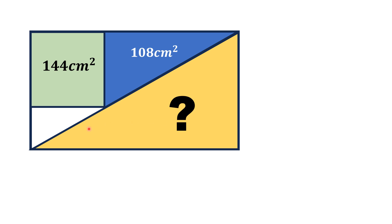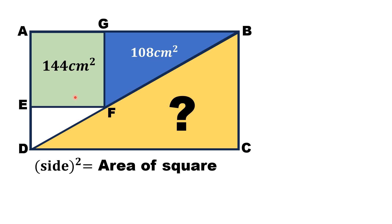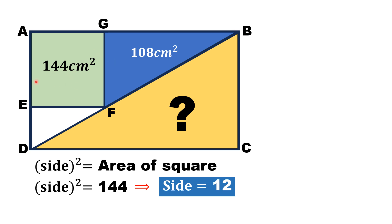Let's move towards the solution and label the figure. We label the rectangle as ABCD and then we label this square as AEFG. We know that area of a square is equal to the square of its side. Since area of this square is given, substituting here, we get side squared is equal to 144, and from here, the side of this square is equal to 12 units. So each side is equal to 12 units.